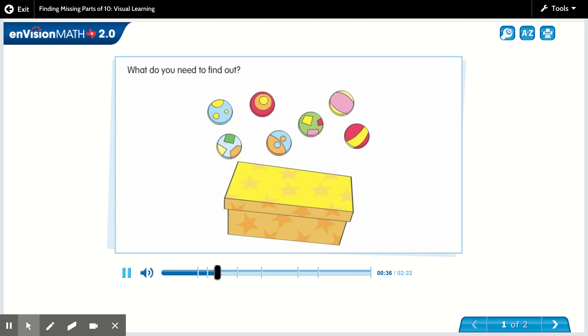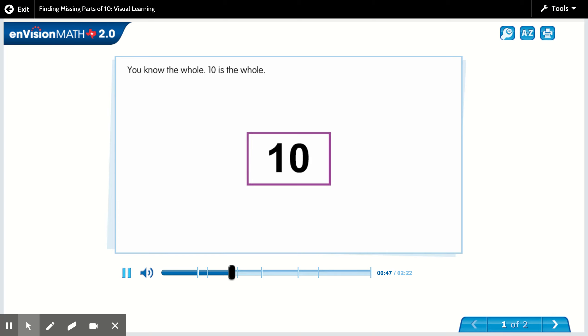What do you need to find out? You need to find out how many balls are missing. You know the whole. Ten is the whole. Why is ten the whole? Because there are ten balls in all.